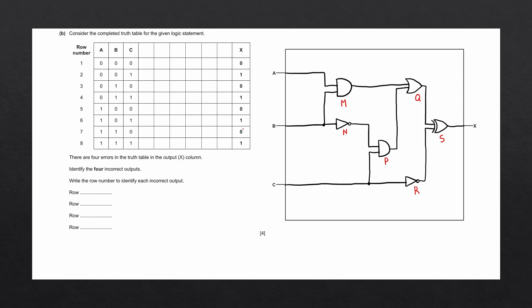To complete the truth table, we're going to have a look at the gates in our logic circuit. I've brought this logic circuit over from part A and we're going to assign each logic gate a column in our truth table. We're going to complete this in alphabetical order of our gates. You can see we've labeled these gates from left to right: M, N, P, Q, R, and S.